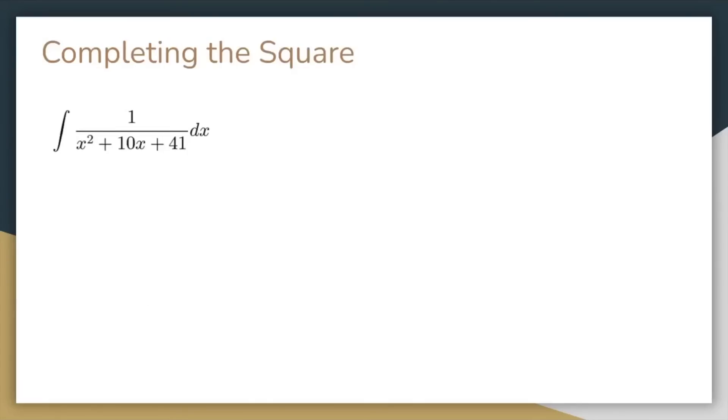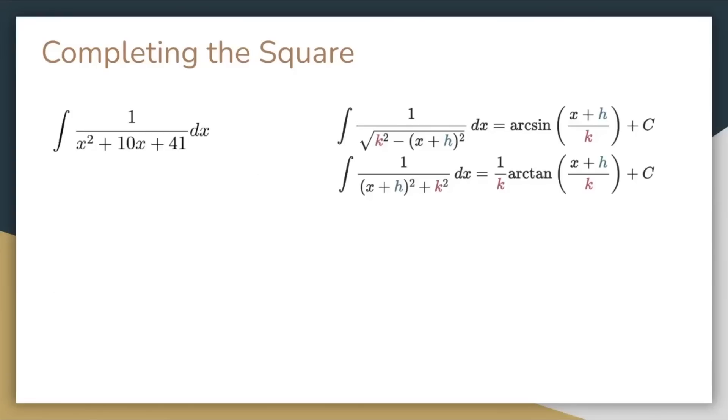And then completing the square just relies on remembering the formulas you saw from the overview slide, which I know isn't the most exciting, but fortunately this method isn't tested that often. But anyway, if you break down the 41 in this problem to 25 plus 16, then you can complete the square. And then plugging this into the formula, you would get the integral is 1 fourth arctangent of x plus 5 over 4 plus c.